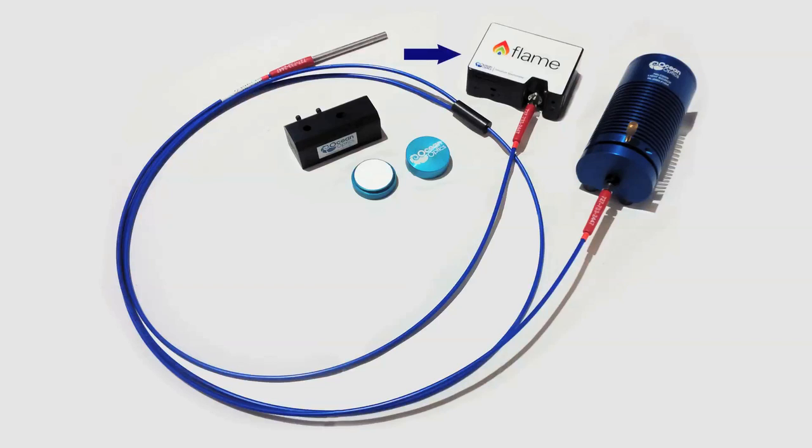Products used are the following: the Flame spectrometer, the HL2000HP FHSA light source, a high-powered tungsten halogen bulb with adjustable light output, a premium 600 micron reflectance probe for VIS NIR, the RPH1 reflectance probe holder, and the WS1 diffused reflectance standard.